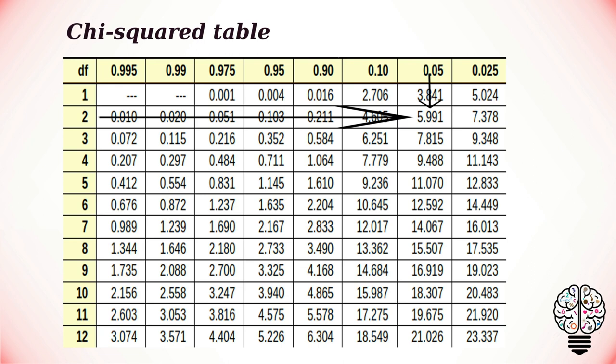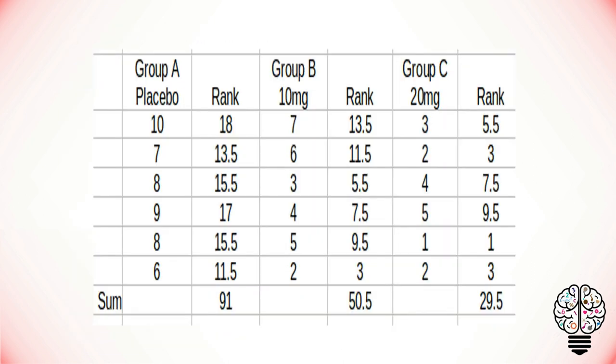Now we have to calculate our H statistic. If our H statistic value is greater than 5.99 then the null hypothesis is rejected. First, let us rank our data and if we get the same value twice or thrice, we find the mean of their ranks and mark respectively and we have to find the sum.